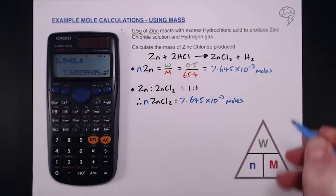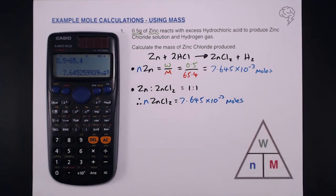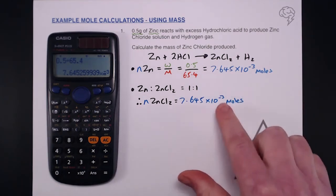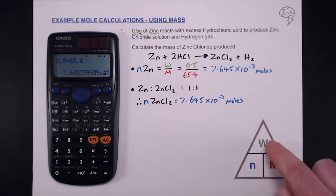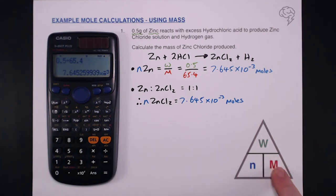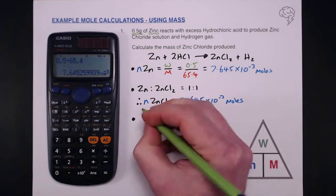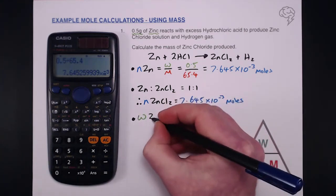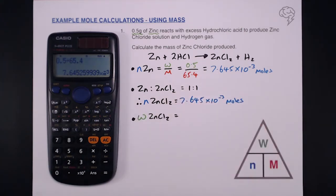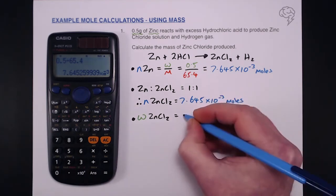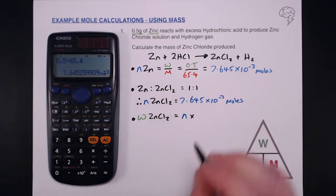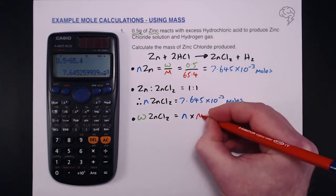That's how many moles of zinc chloride we've got. Now we've got this we can actually find the mass of zinc chloride needed. Our third and final step is to find the mass of zinc chloride produced. That is number of moles times molar mass. That equals number of moles which we have times molar mass which we always have.